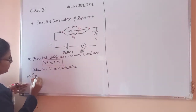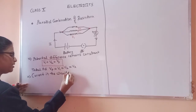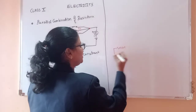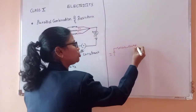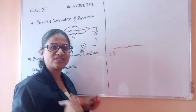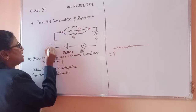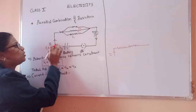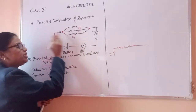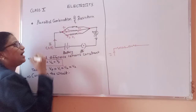Next, let us consider the current in the circuit. In series combination, the current flows without interruption in only one way through different resistors, which is why current remains constant. But in parallel combination, the current I — let us take 1 ampere — reaches a junction where other wires branch off. So the current distributes itself as I1, I2, and I3.